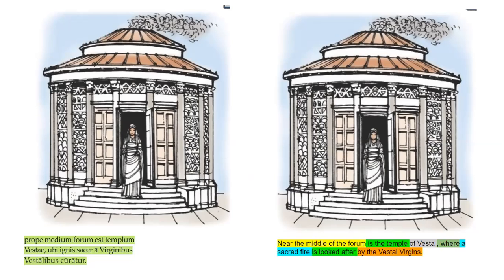The Vestal Virgins — a thing often associated with priestesses is that they have to be virginal, for many priesthoods, though not all — especially not in Mesopotamia. But if they were caught breaking this covenant, they were buried alive. Although, to my knowledge, there's only one event in history where that actually happened.